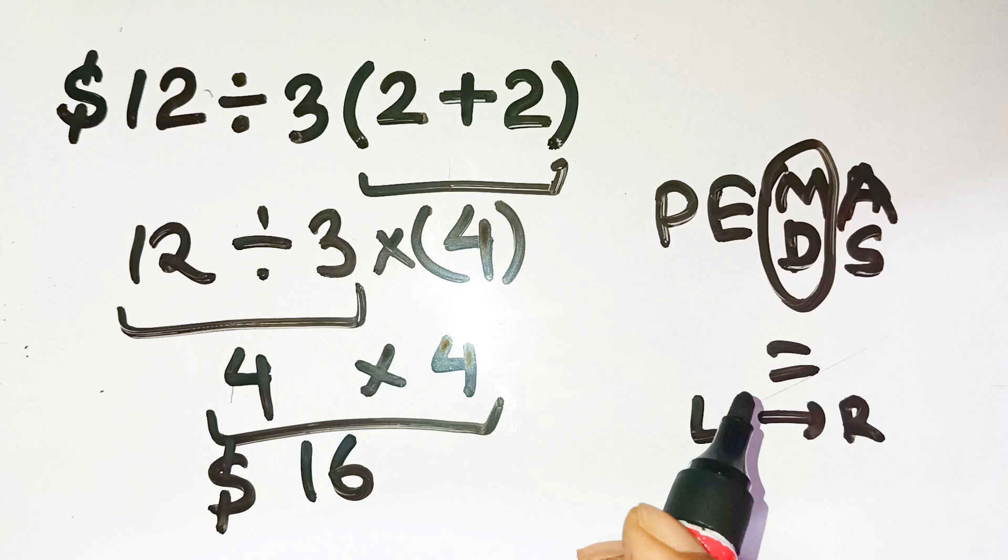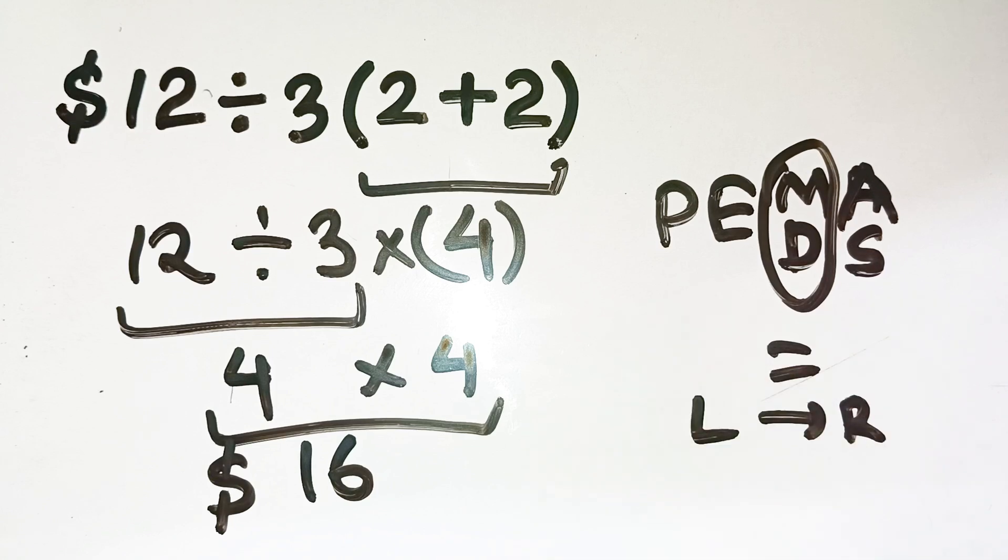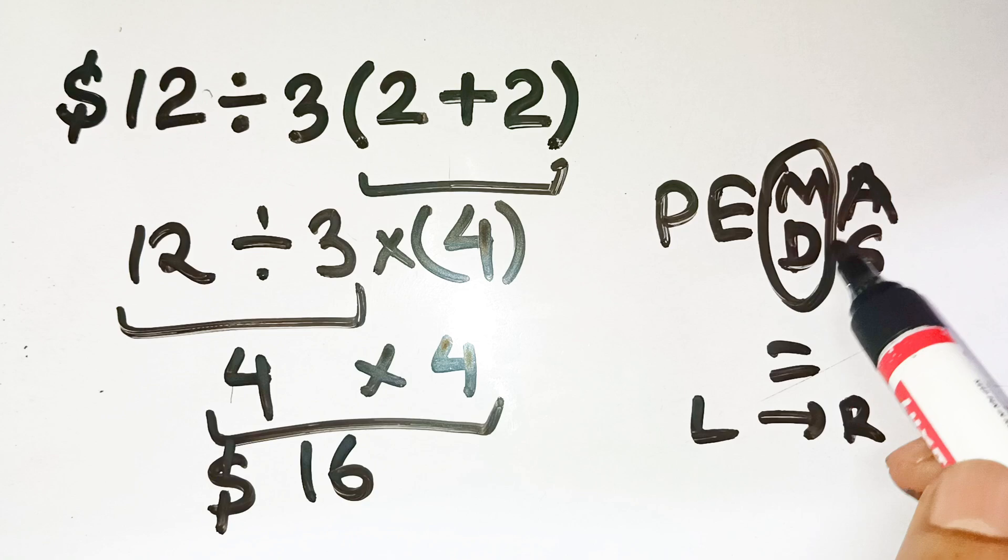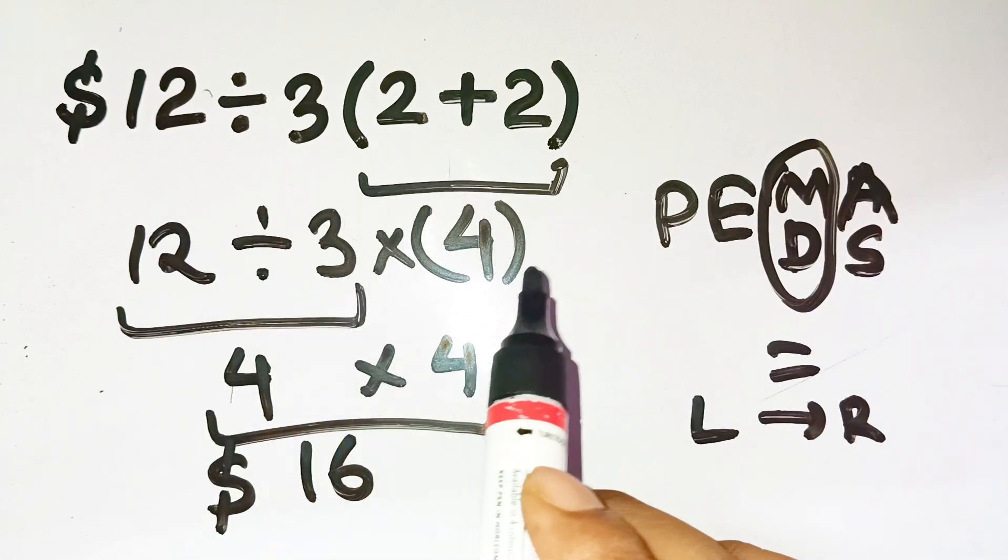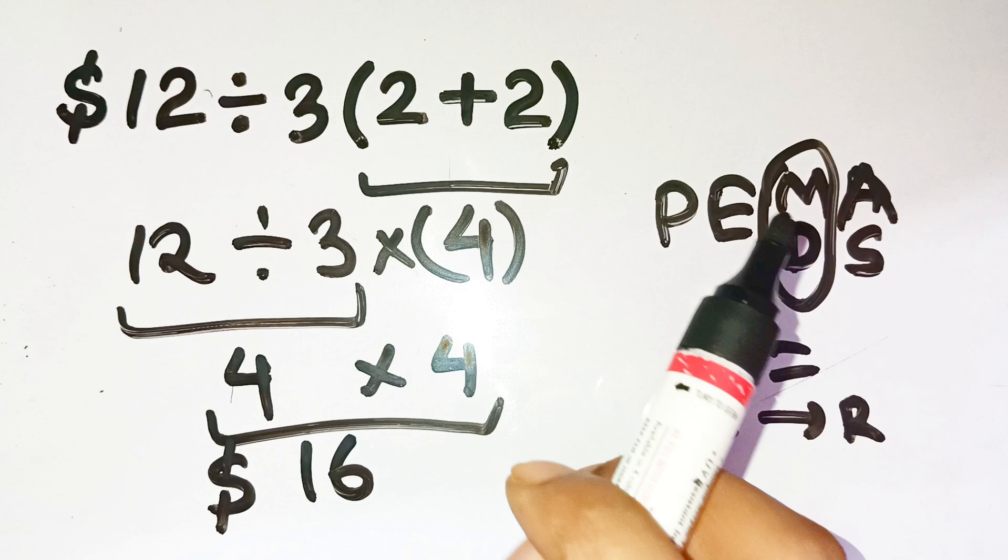So remember, in both math and money, the order matters. Follow PEMDAS correctly. Handle parentheses first, then division and multiplication from left to right. So again, $12 divided by 3, open parentheses, 2 plus 2, close parentheses, equals $16, not $1.